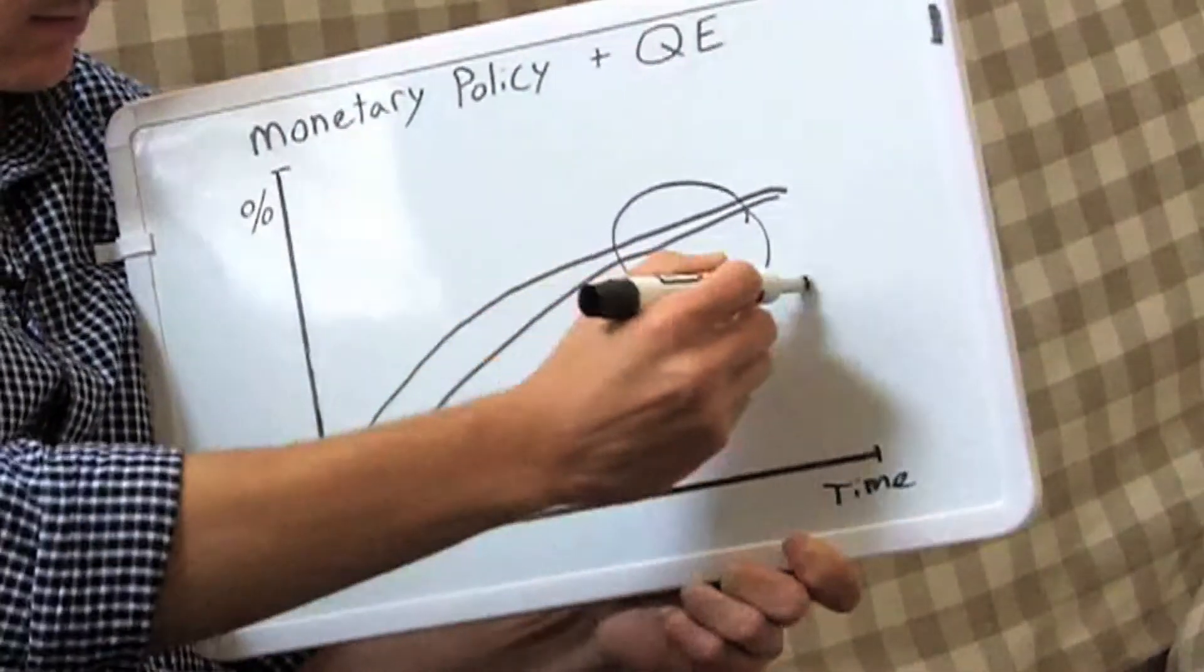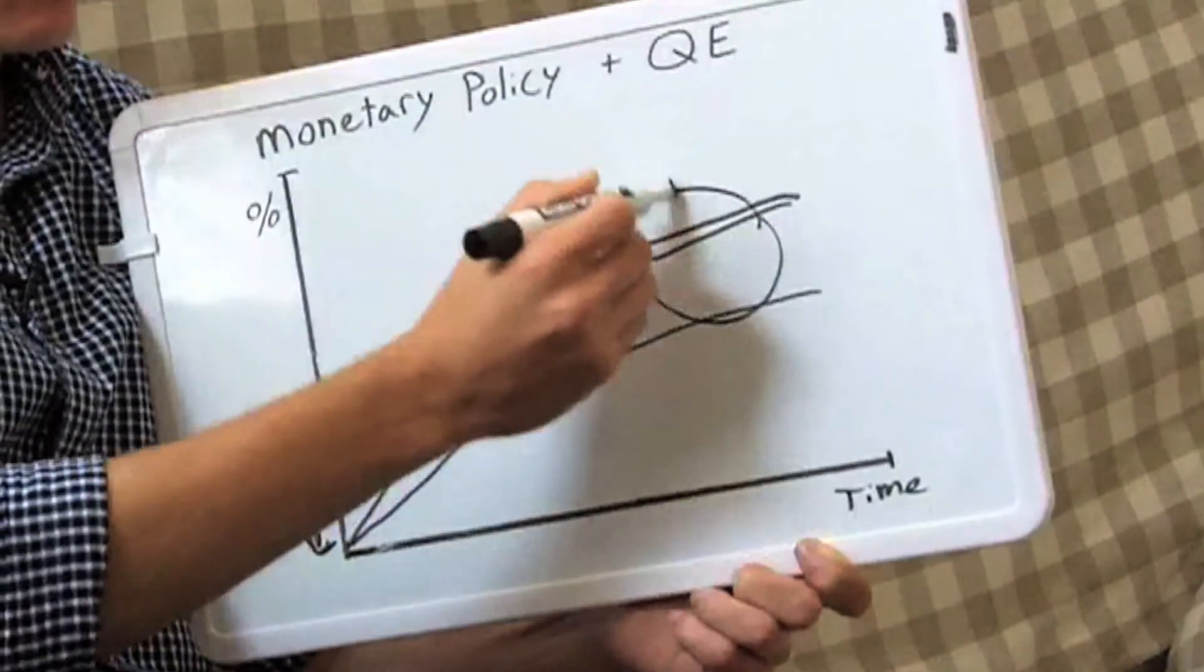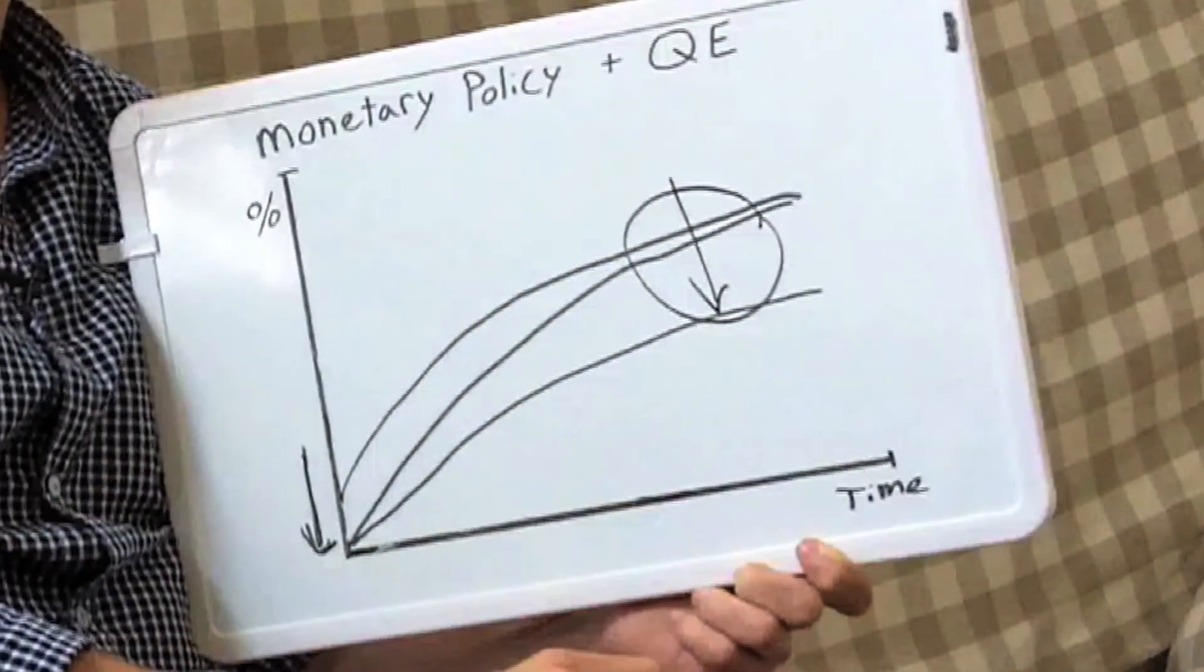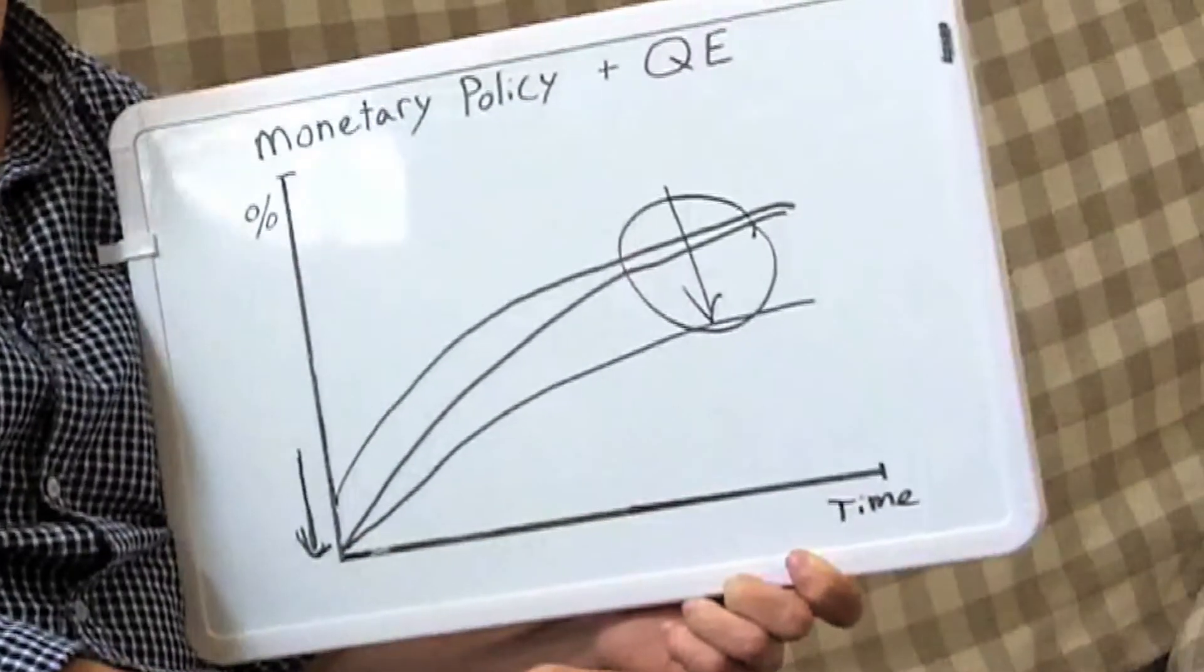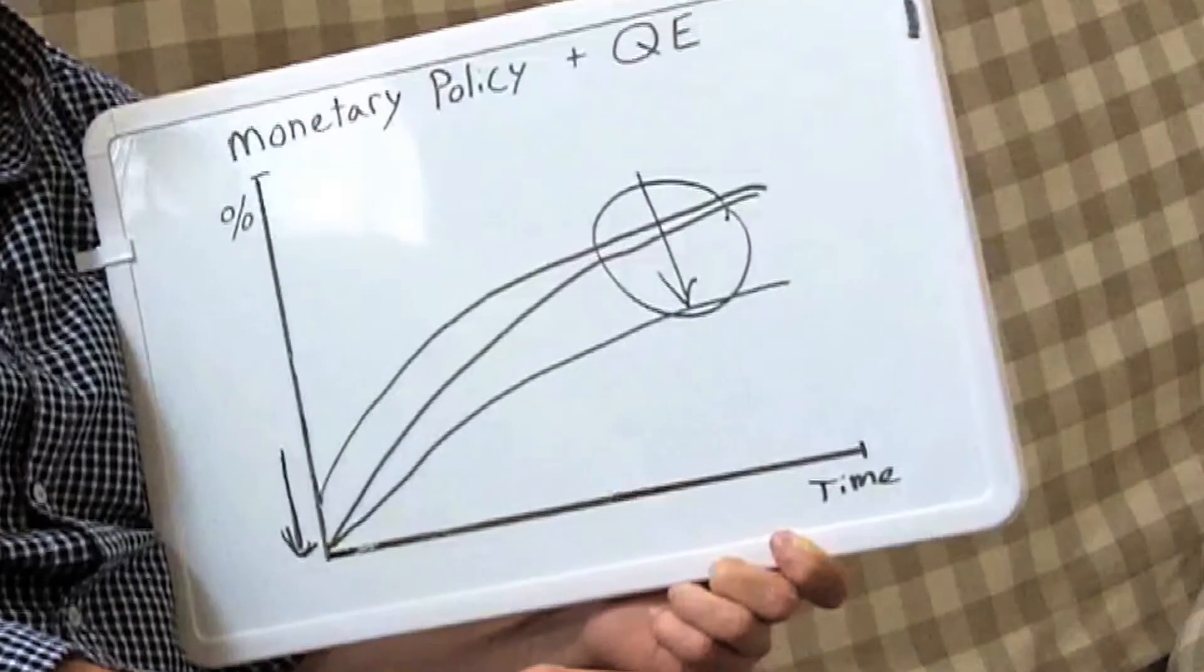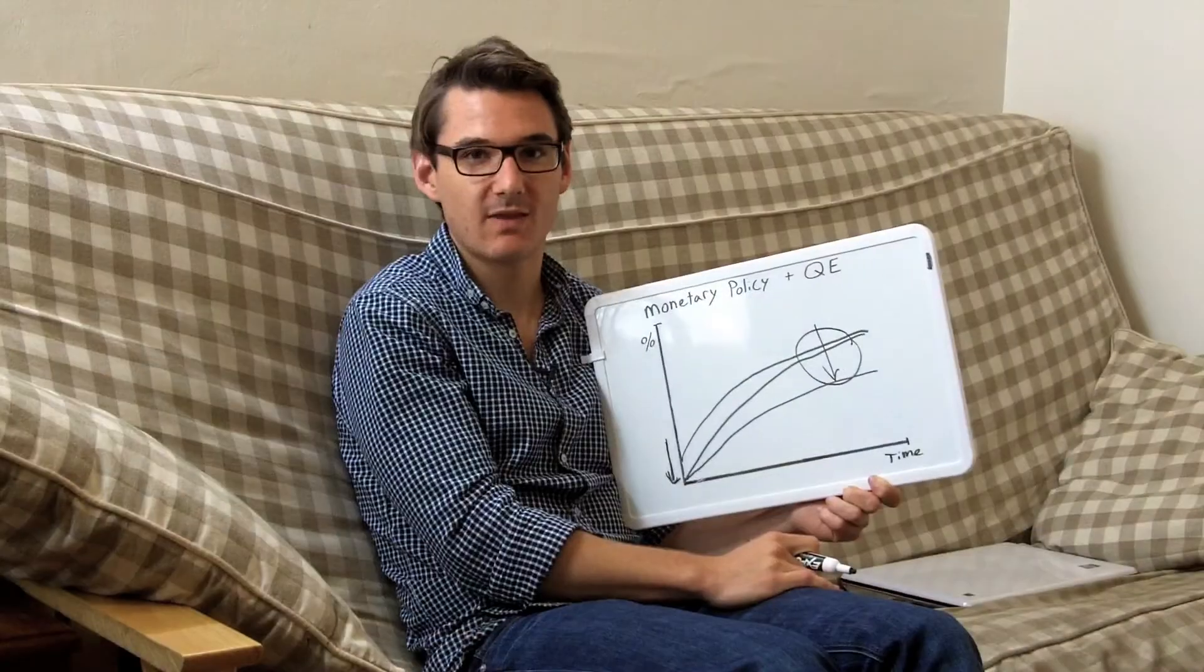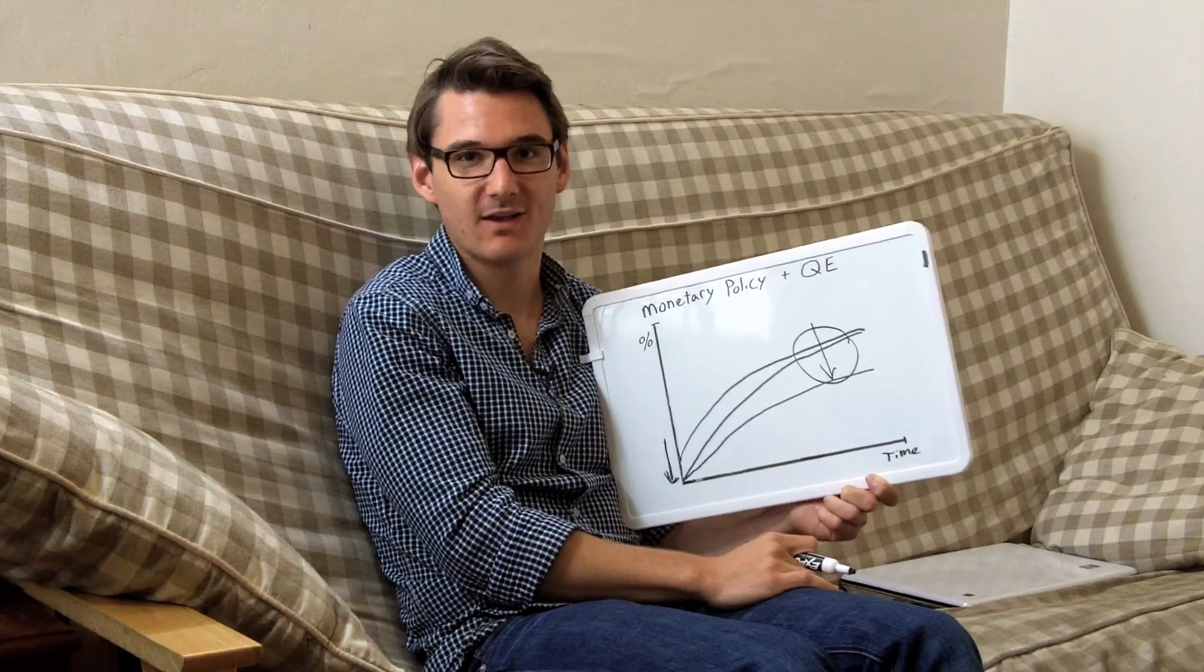We have lower short-term and lower long-term bonds, and that would cause much lower interest rates out into time, which hopefully would cause people to borrow more money and companies to borrow more money and to invest and spend more. And that is monetary policy and quantitative easing in a nutshell.